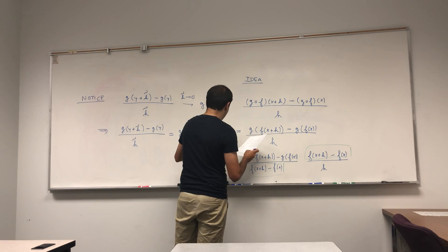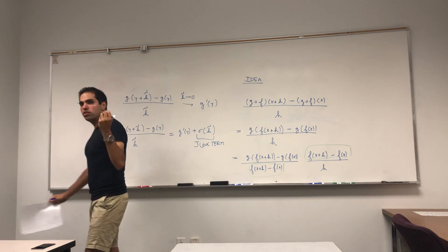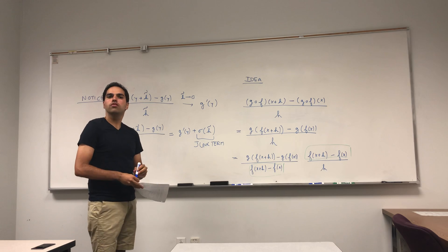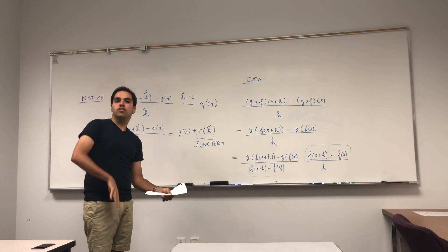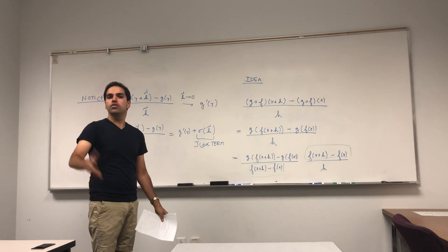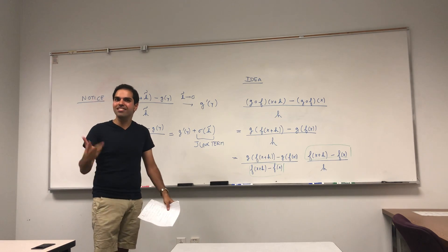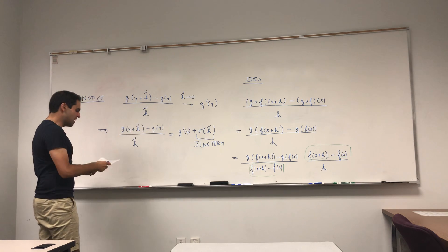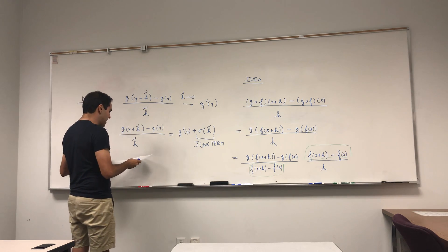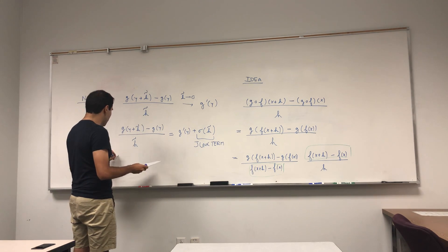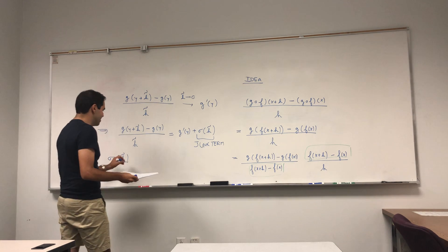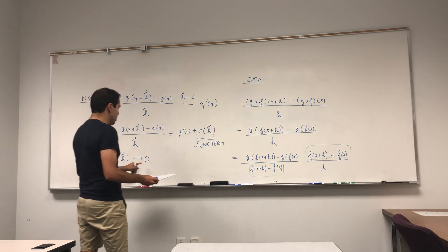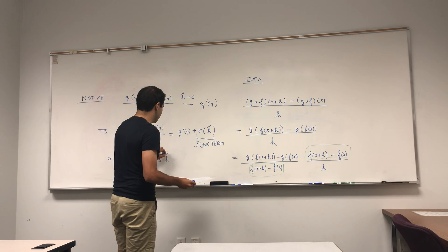What does it mean for a number to be really close to g prime of y? It means it equals g prime of y plus some junk term. So we have: g of y plus h-tilde minus g of y, over h-tilde, equals g prime of y plus sigma of h-tilde, where sigma is an error term. And because it's junk — it's very small — we have that sigma of something goes to zero as that something goes to zero.